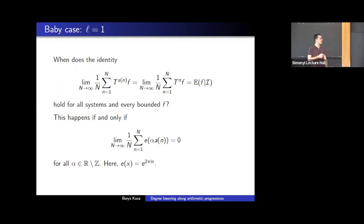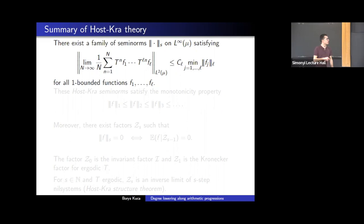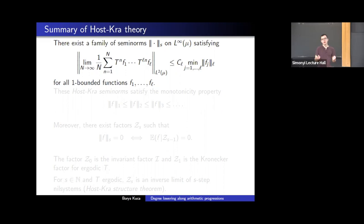Let's see what happens for longer averages. Let me very briefly summarize the Host-Kra theory. In their seminal paper from about 20 years ago, Host and Kra defined a family of seminorms that can be used to control multiple ergodic averages. This family of seminorms is indexed by natural numbers, and it's useful because for linear averages of length L, the L² limit is controlled by some constant times the minimum of the degree-L seminorm of any of the functions, assuming all functions are bounded by one.